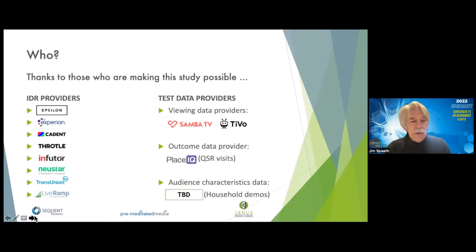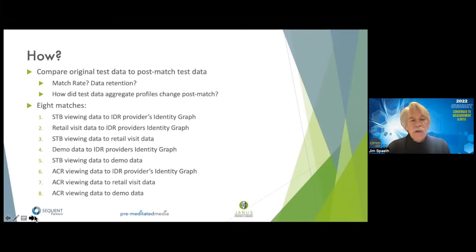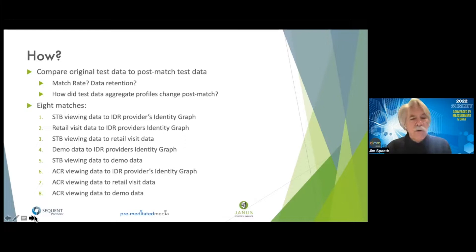We have test data providers on the right: Samba and TiVo, Place IQ. We have a little wrinkle going on right now with the demo data, so that's TBD. But what are we going to do with these data sets? It's pretty simple: we're going to match data and then compare the original data to the matched data — what's the match rate, how much data have we retained, and has the data been biased in any material way after the match? That involves a series of eight matches, taken step by step.